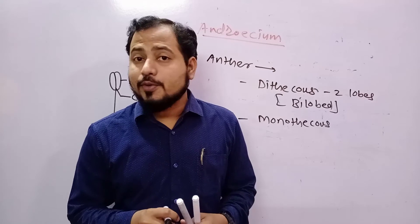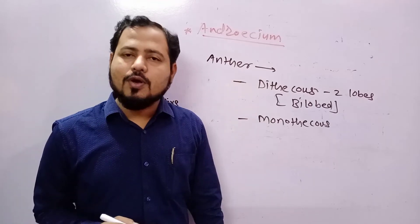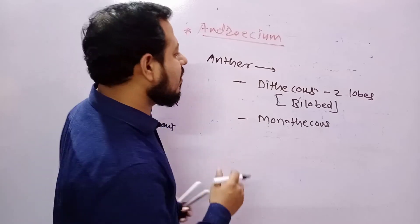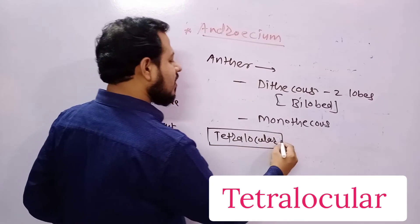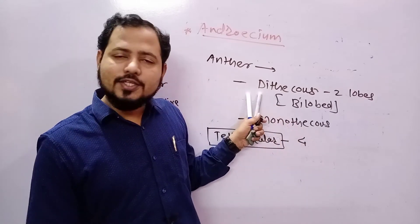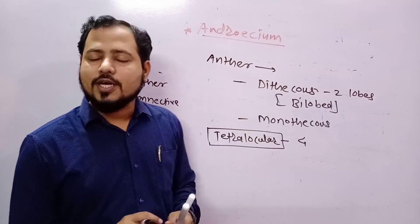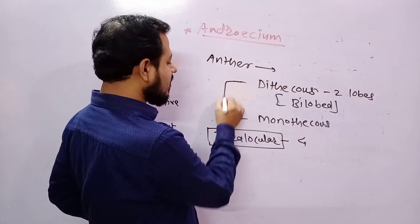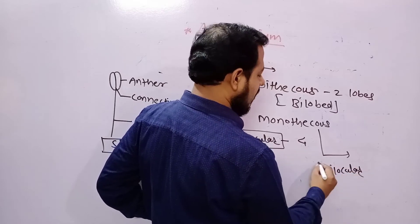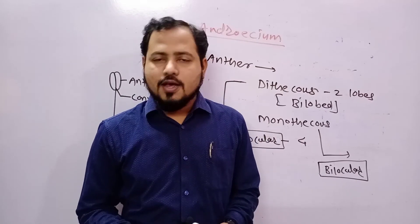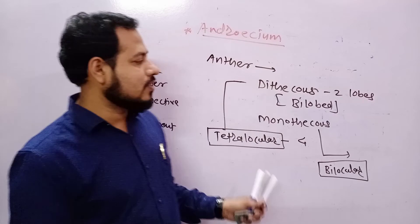Anther में कभी single chamber भी हो सकता है, लेकिन उस single chamber/lobe के अंदर फिर two sub-cavities दिखाई देंगी जिनको lobule कहते हैं। अगर anther dithecous है तो उसमें four locules होंगे — इसीलिए इसे tetralocular कहते हैं — दो big chambers, each chamber has two small cavity-like structures called lobule or locule। Monothecous anther bi-locular होगा — two sub-chambers। Dithecous anther में four different locules होंगे।